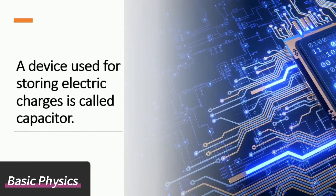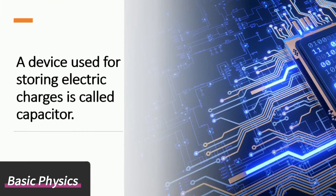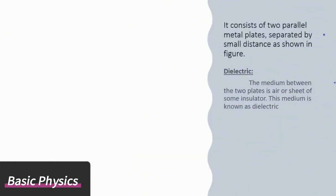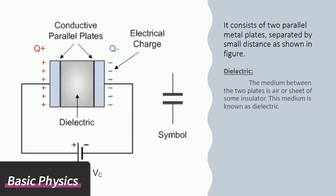Capacitor is a device used for storing electric charges. It consists of two parallel metal plates separated by a small distance as shown in figure. The medium between the two plates is air or a sheet of some insulator. This medium is known as dielectric. The presence of dielectric can increase the capacitance of capacitor.